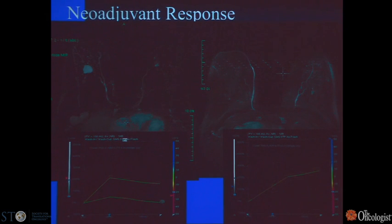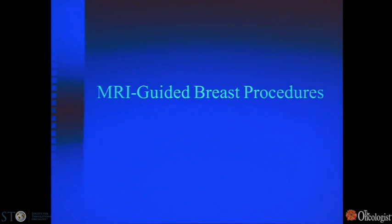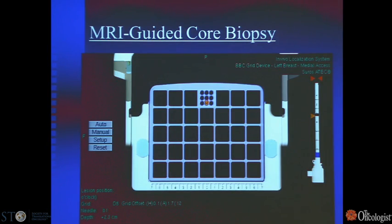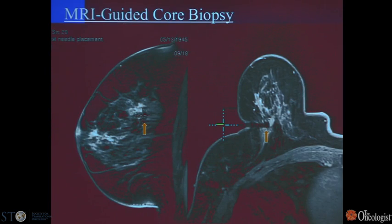Subsequent response to neoadjuvant therapy was remarkable, as seen in the upper right image. MR can also be used for interventional procedures, and is commonly used in breast imaging. The patient is in a prone position and biopsies may be done from a lateral approach. This is an example of a core biopsy device placed along the lateral aspect of the breast for MR guidance, with a single image showing the needle tract to confirm position relative to the mass following contrast administration.